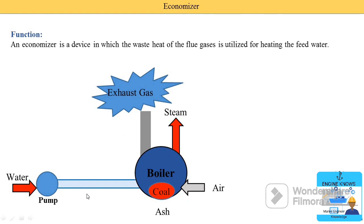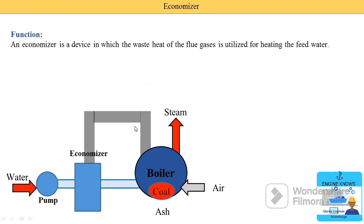If we want to heat the water, we install an economizer. If we need to heat the air, we put an air preheater. If we want to heat the steam, we put a superheater. All three components use the exhaust gases for heating. The water from the pump comes into the economizer, and the exhaust gas is also supplied to the economizer, heating the water. Then exhaust gases from the economizer go to the air preheater, then to the chimney, and then to the atmosphere.